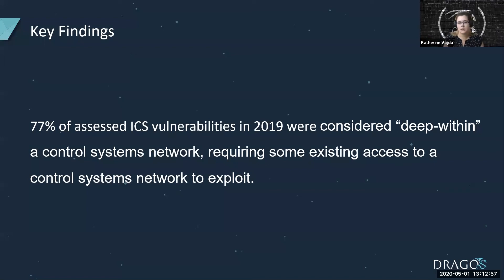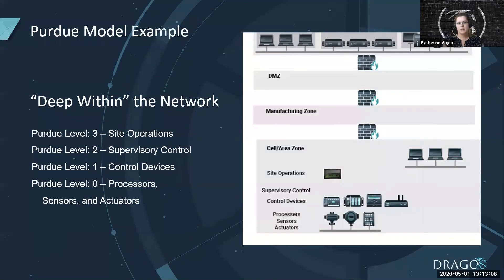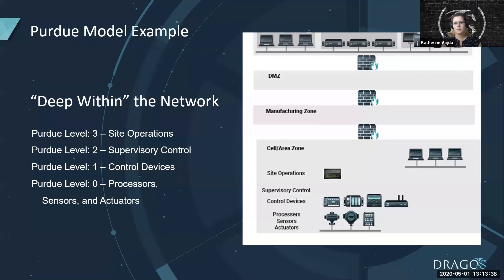77% of assessed vulnerabilities were considered deep within a control systems network, requiring some existing access to a control systems network to exploit. This means we've marked them as either Purdue Model 3, 2, 1, or 0. These could be devices such as Modicon 7, Cyprotech relays, ABB Reliance 650s, PLCs, industrial switches, or wireless routers. It could be licensing software like Advantech, Diag Anywhere Servers, FlexNet Publisher, Plant Connect, or SciTech. If these devices aren't deep within your network and are accessible from enterprise, DMZ, or even the internet, then you have bigger problems beyond the vulnerabilities. Several of these devices — just being able to route network packets to them alone — is an increased risk. Depending on your maturity model, your network might not be architected in the way that we're describing when we say deep in the network.